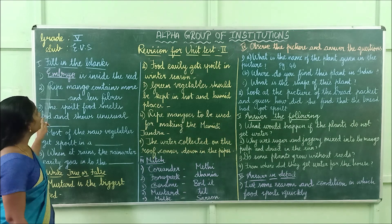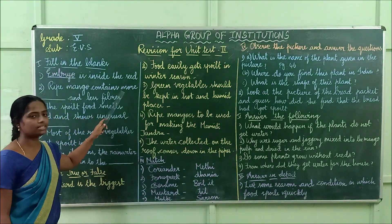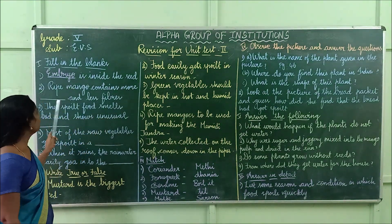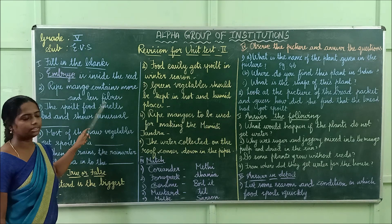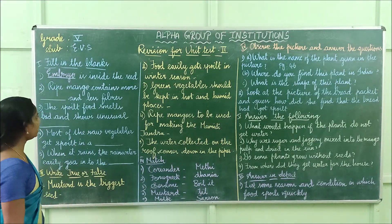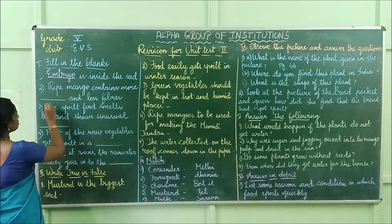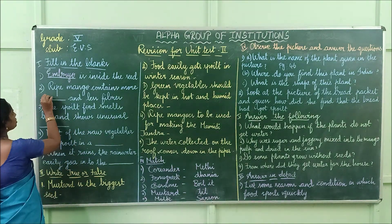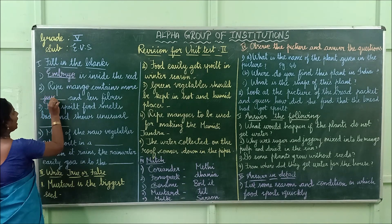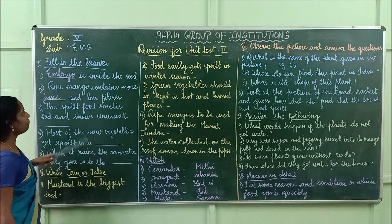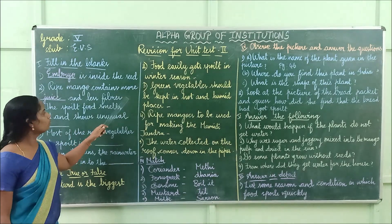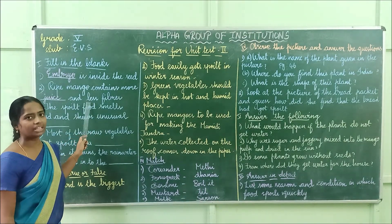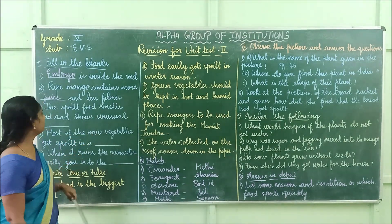Second one: dried mango contains more dash and less fibres. The answer is juice. Spelling: J-U-I-C-E. Ripe mango contains more juice and less fibres.